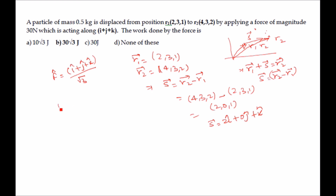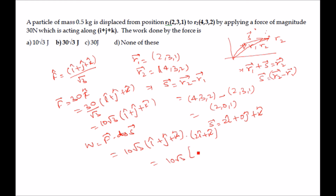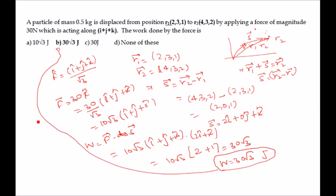The force acts along i + j + k, so the unit vector is (i + j + k)/√3. Since the magnitude is 30 N, force F = (30/√3)(i + j + k) = 10√3(i + j + k). Work done W = F · s = 10√3(i + j + k) · (2i + k) = 10√3(2 + 0 + 1) = 30√3 joules. The answer is option B.